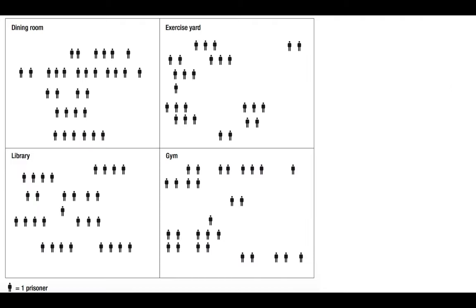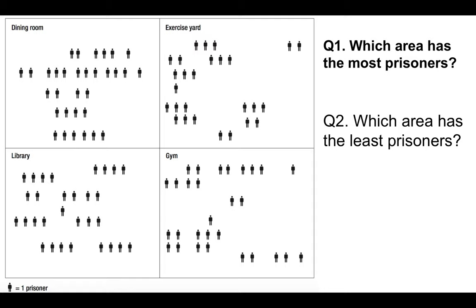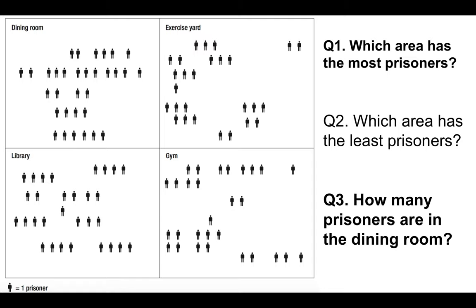Question number one. In the bottom left corner it says one dot equals one prisoner. We've got the dining room, exercise yard, gym, and library in this fictitious prison. Question one: which area has the most prisoners? Question two: which area has the least prisoners? Question three: how many prisoners are in the dining room? You have to add up all of the prisoners in each particular area — the test is looking for speed and accuracy.